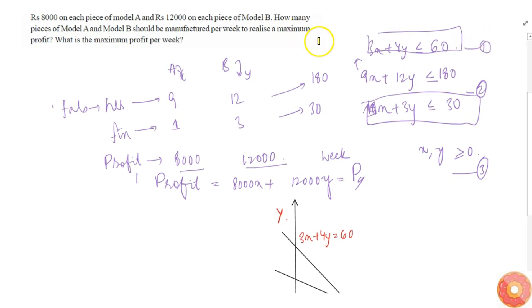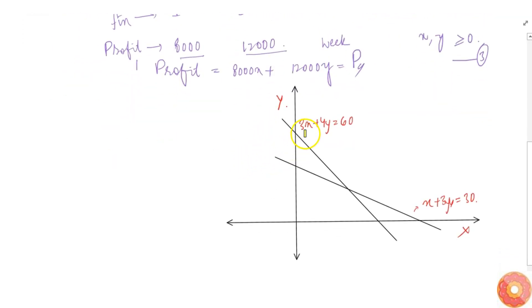So, first. The constraint is 3X plus 4Y less than 60. So, 3X plus 4Y less than 60 will be this region. Towards the left of this line. So, this will be it.